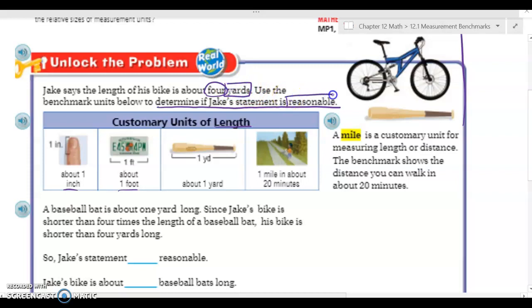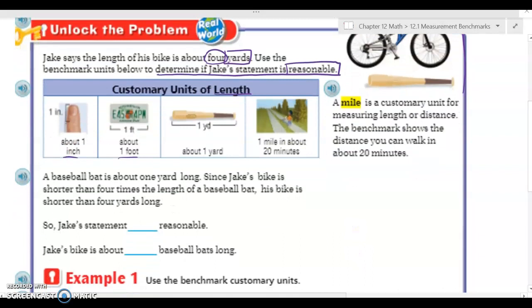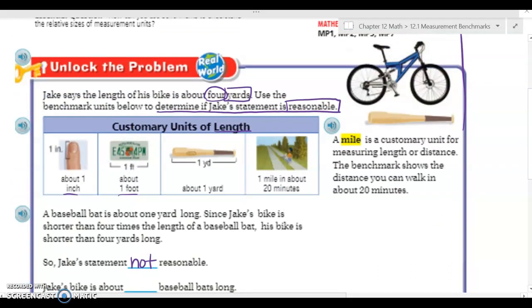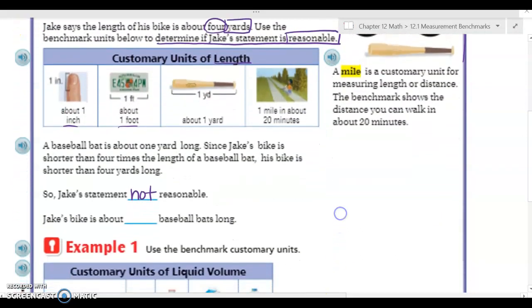Well if you think about it, a baseball bat is about one yard long. Since Jake's bike is shorter than four times the length of a baseball bat, if I line up four baseball bats in a row, Jake's bike is much shorter than that. His bike is also shorter than four yards long. So Jake's statement is not reasonable. However, if we look at our picture, we can kind of see that a baseball bat and a bike are almost the same length, so Jake's bike is about one baseball bat long.